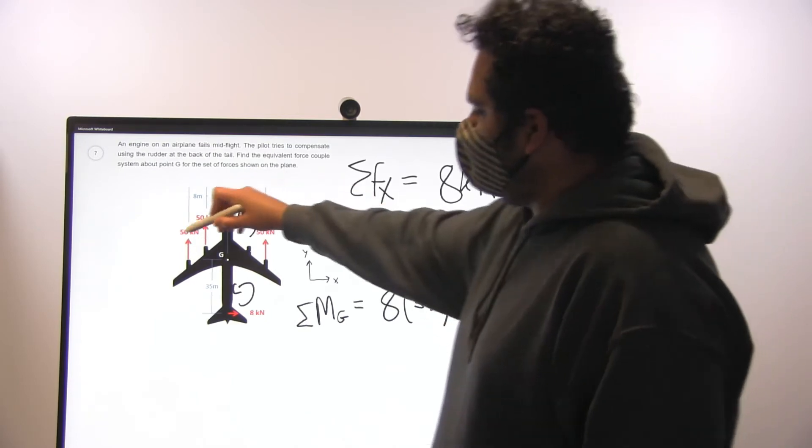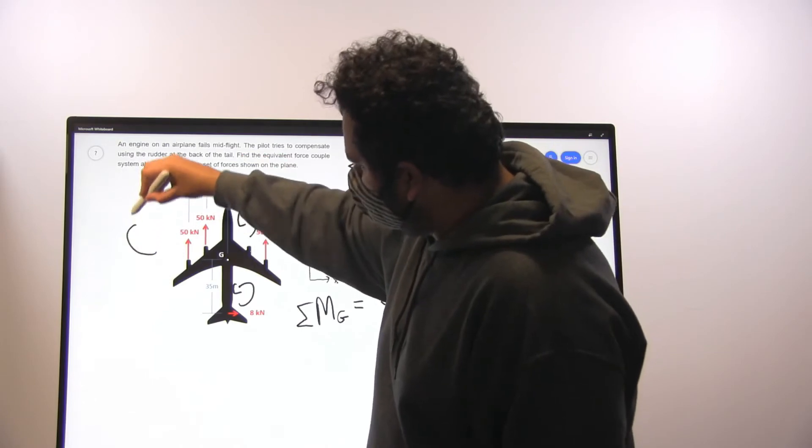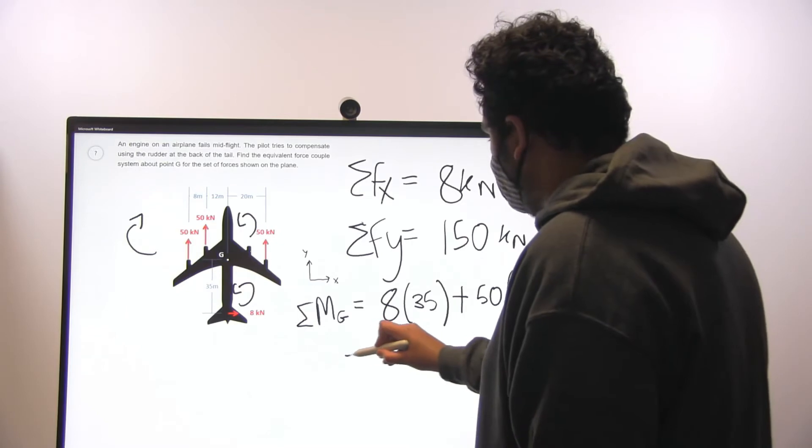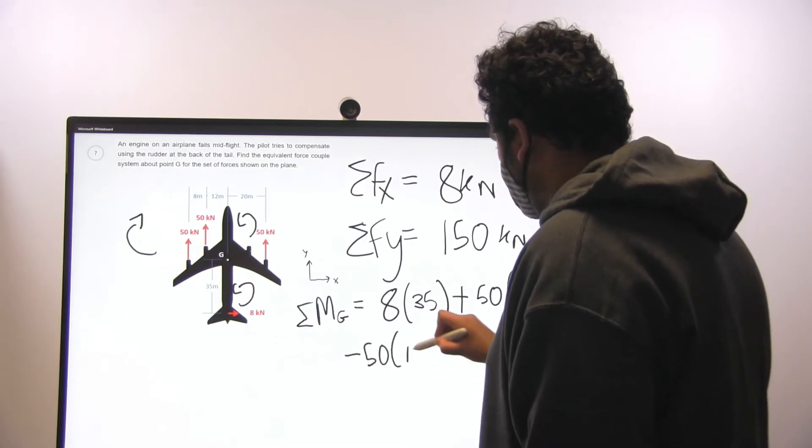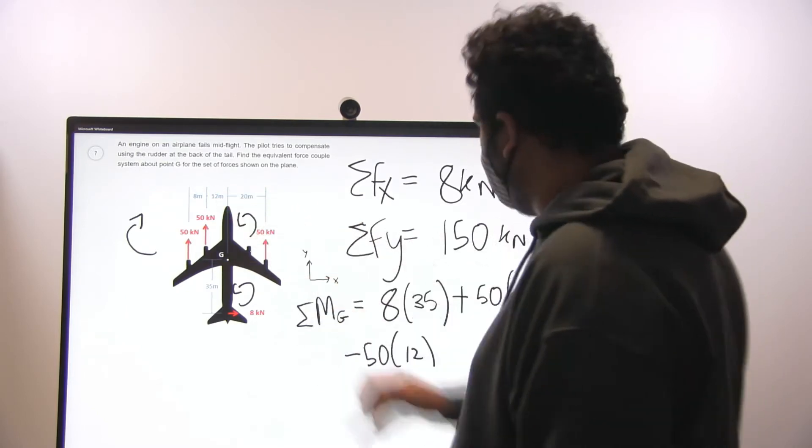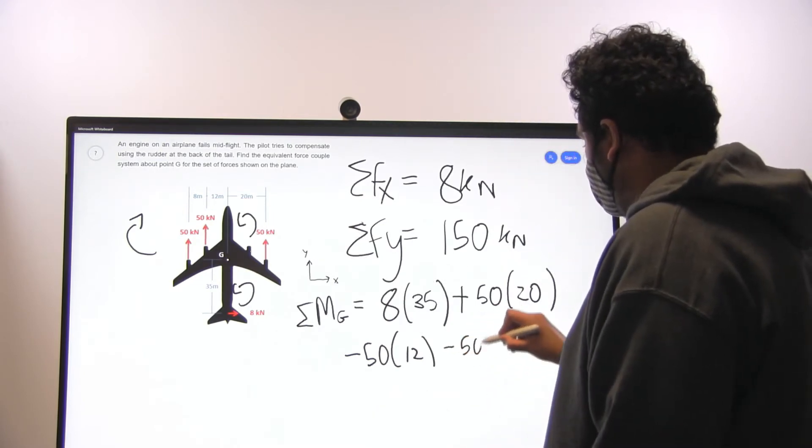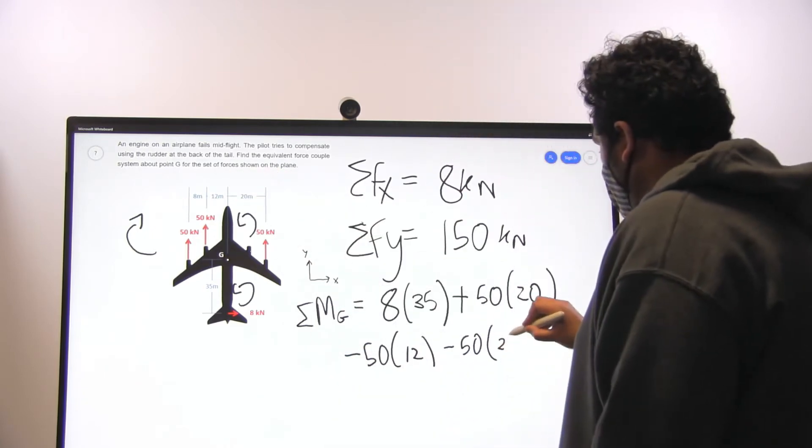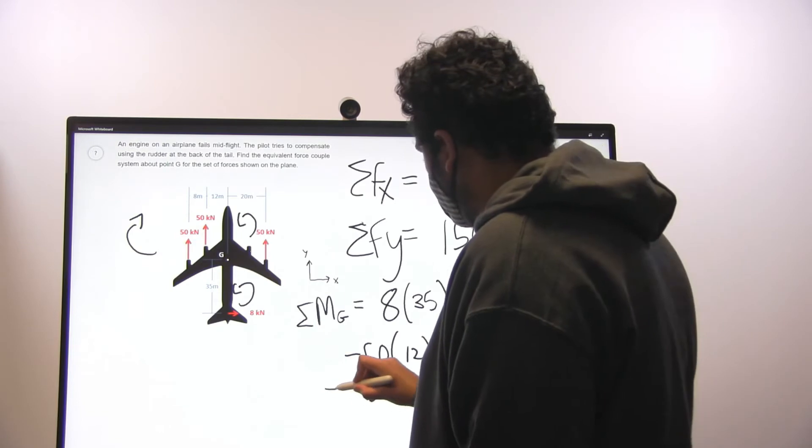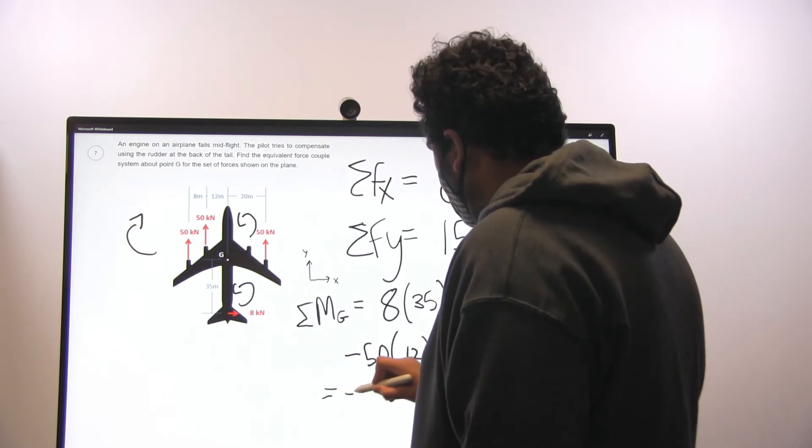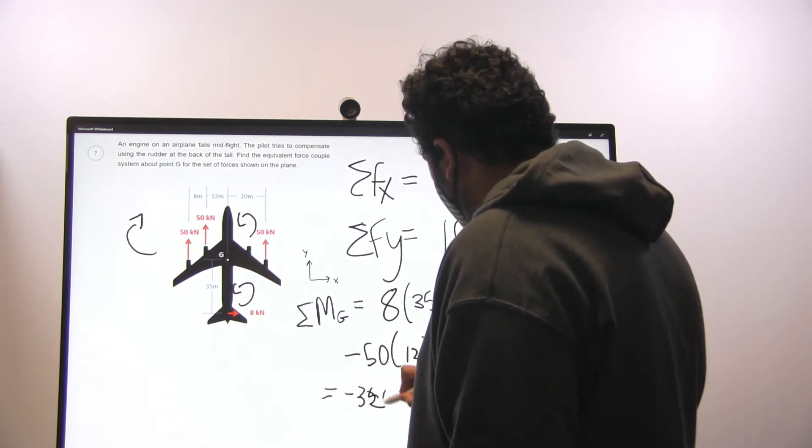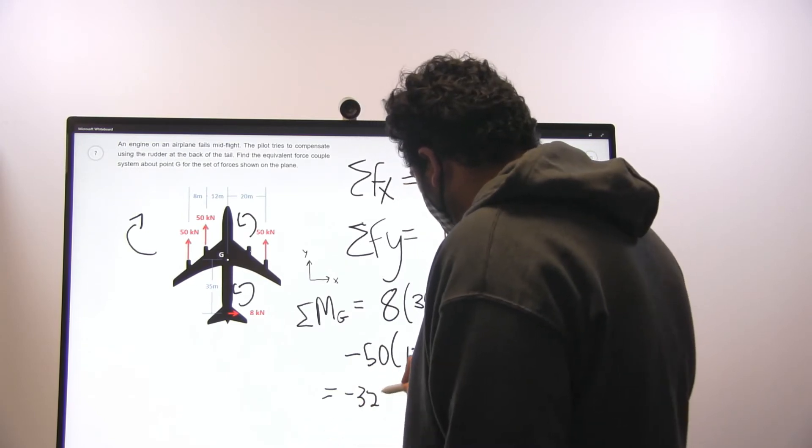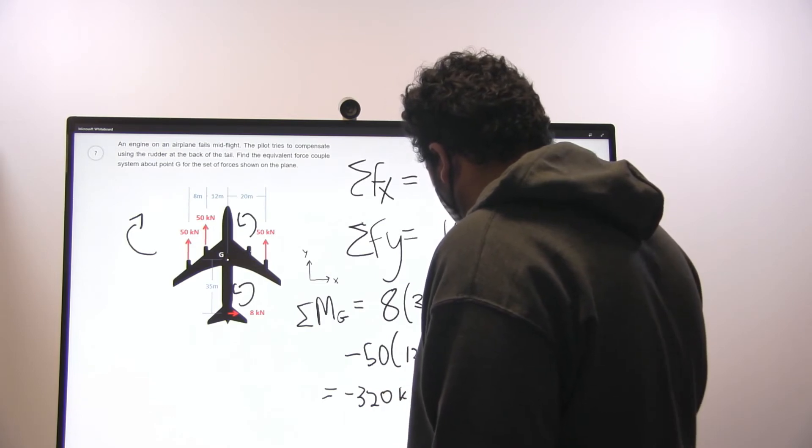Next, these two 50 kN forces are in a clockwise direction, so they'll be negative. It's going to be minus 50 times this first 12, minus 50 times this 12 plus 8, which is 20. And it's going to come out to be equal to minus 320 kN meter.